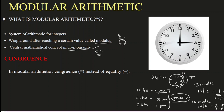Before seeing some other examples to understand this concept clearly, one must have the question — what is this congruence? Basically in modular arithmetic, or if you take cryptography, we use congruence. In modular arithmetic, we use congruence instead of equality. One must have the question: why do we use three lines instead of two lines? Two lines represent equality.